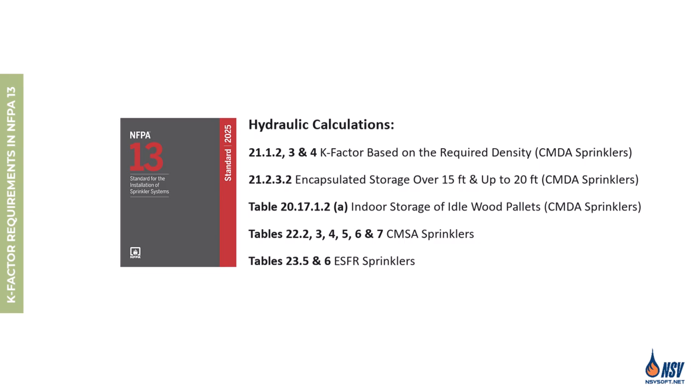NFPA 13 provides detailed tables listing both the K factor and the minimum required pressure, which together help determine the minimum flow rate needed for each sprinkler. Although the requirements mentioned do not cover every detail, they serve to highlight the importance of the K factor in designing fire sprinkler systems.